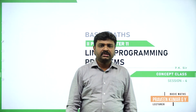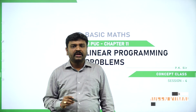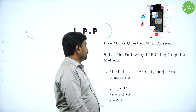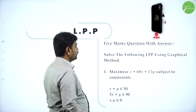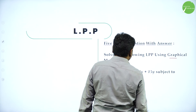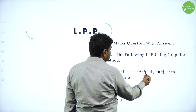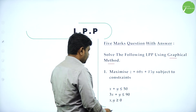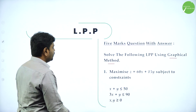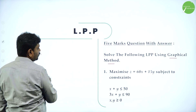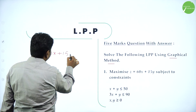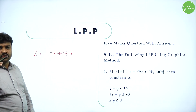Welcome to the session, dear students. Today we will go ahead with linear programming problems, solving by graphical method. These are standard FIMA questions. Solve the following LPP using graphical method: maximize Z = 60x + 15y, subject to constraints x + y ≤ 50, 3x + y ≤ 90, and x, y ≥ 0. Z = 60x + 15y is the objective function which we need to maximize or minimize.